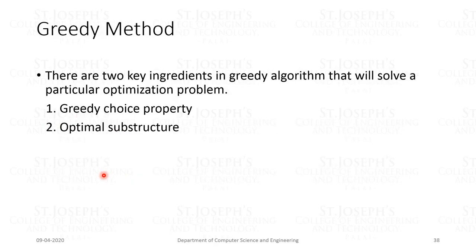The two key ingredients in a greedy algorithm are the greedy choice property and the optimal substructure. By the greedy choice property, a globally optimal solution can be arrived at by making a locally optimal or greedy choice. When a choice is to be made, it looks for the best choice in the current problem — the choice that seems best at the moment. The choices made may depend on choices made so far but cannot depend on any future choice. The algorithm works top-down, making greedy choices one after another, reducing each problem instance into a smaller one.